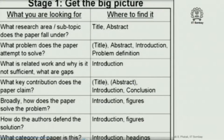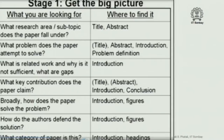What is the related work and why is it not sufficient — what are the gaps? This should generally be found in the introduction. What key contribution does the paper claim? Again: title, abstract, introduction, and conclusion. Broadly, how does the paper solve the problem? Introduction and figures. How do the authors defend the solution? Introduction and figures. What category of paper is this? Introduction and headings. This is how you get the big picture.